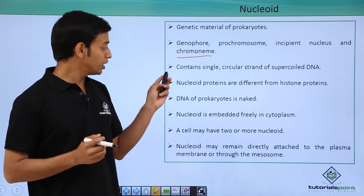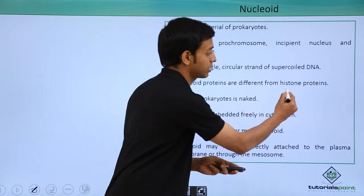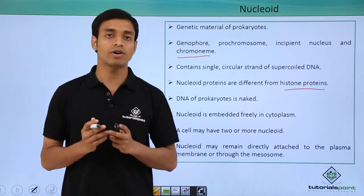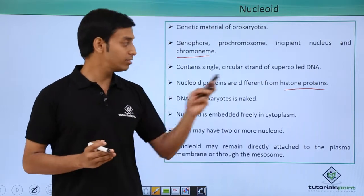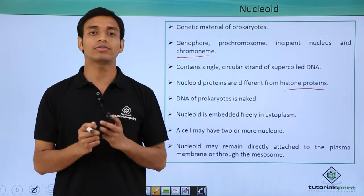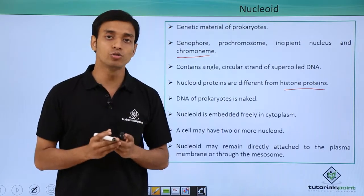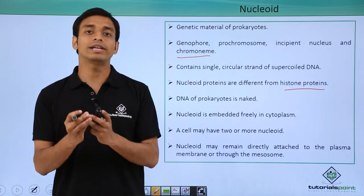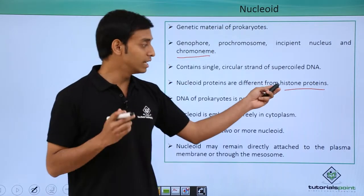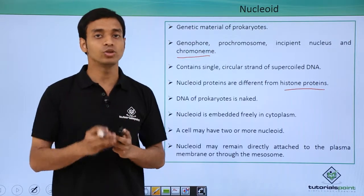The nucleoid proteins are very different from the histone proteins. What are histone proteins? These are basically the proteins found mostly in eukaryotes, and these histone proteins help in the supercoiling of the long strand of DNA — which is mostly 2.2 meters — and it is supercoiled and present inside a very small nucleus. So histone proteins help in supercoiling in the case of eukaryotic cells.